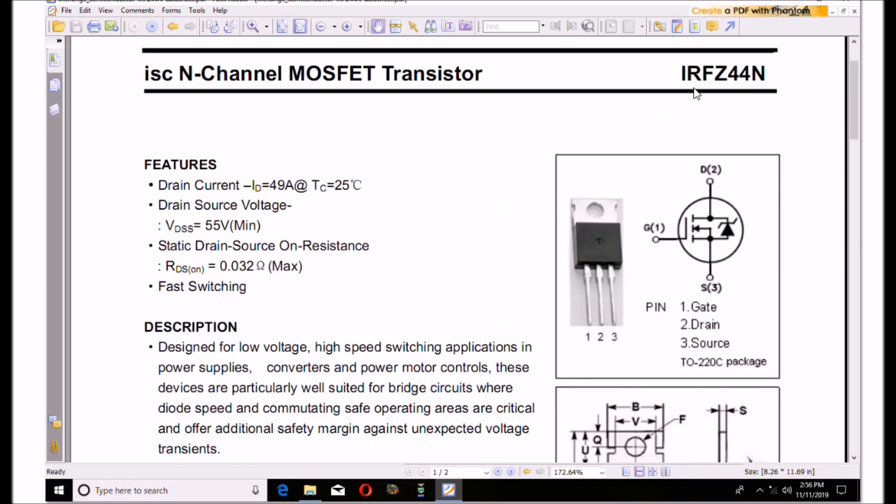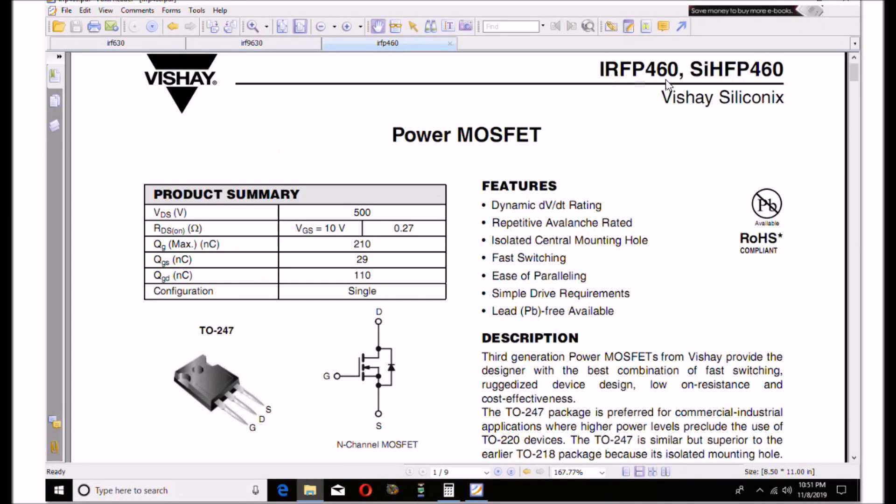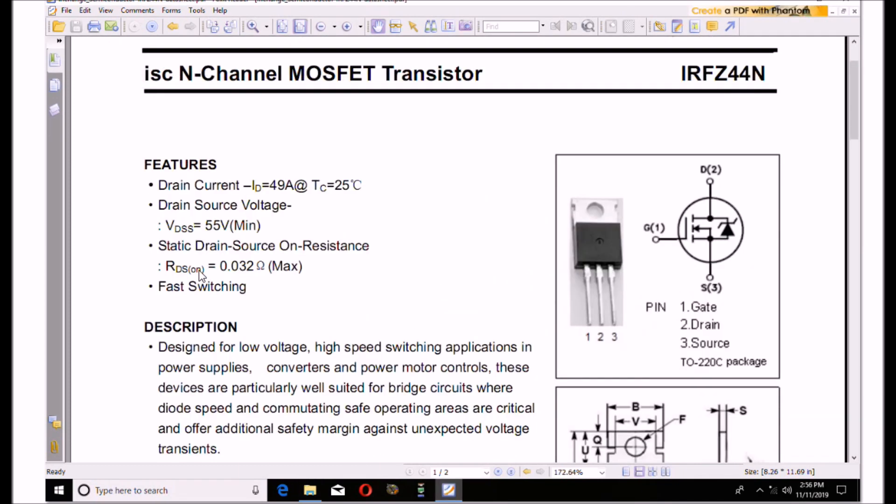This is another one. This is an N-channel and I have a few of these and these work great. The RDS on is 0.032 ohms as opposed to the IRFP460s which has 0.27 ohms. This would be a great transistor to use as well. The problem is, again, these ultra-low RDS on MOSFETs are generally low voltage. This one, again, is limited to 55 volts. This is an N-channel device.